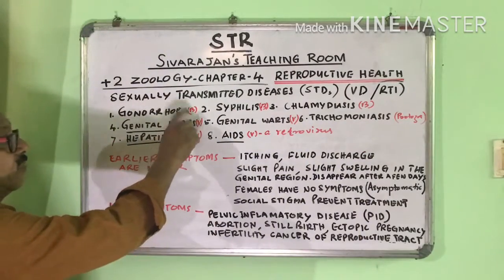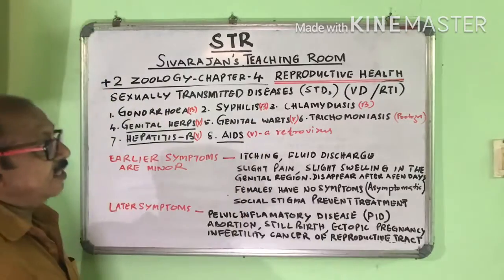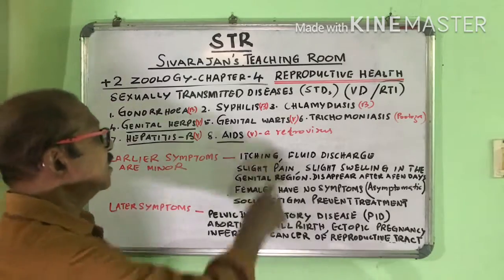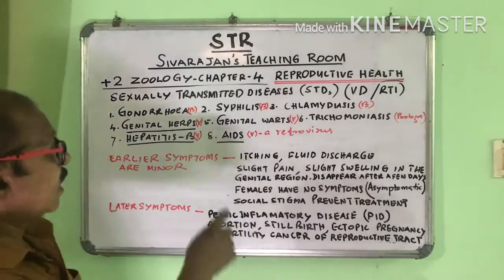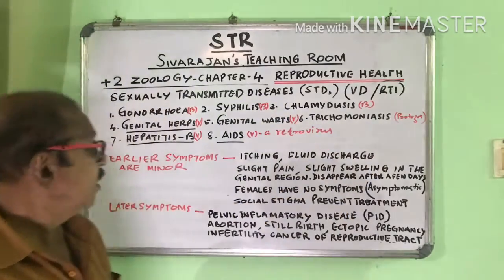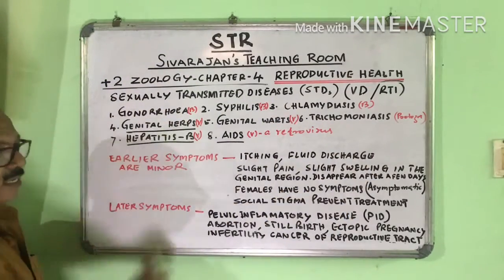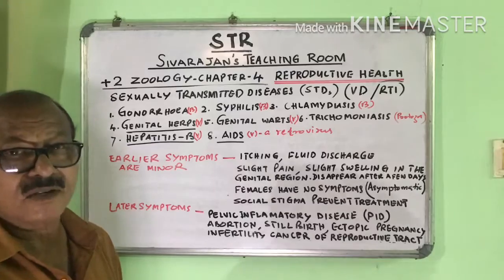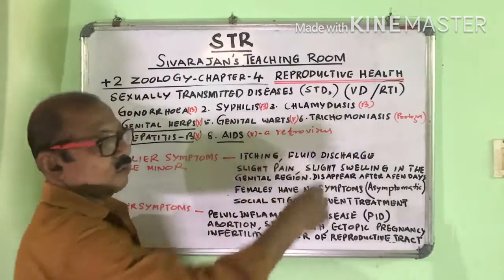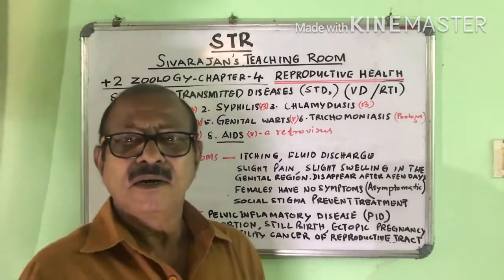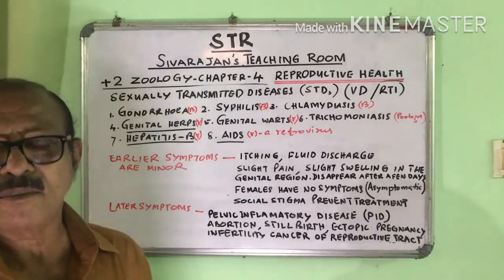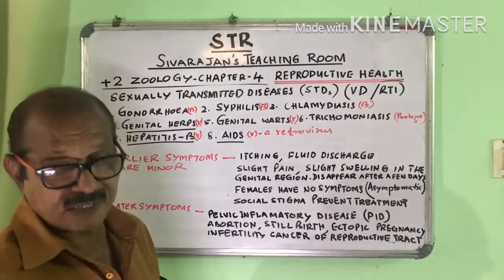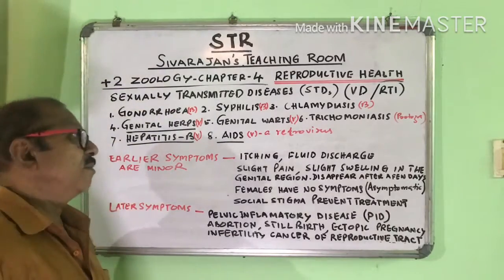So: Gonorrhea caused by bacteria, Syphilis by bacteria, Chlamydiasis by bacteria, Genital Herpes by virus, Genital Warts by virus, Trichomoniasis by protozoa, Hepatitis B by virus, and AIDS by virus — specifically a retrovirus. A retrovirus is a virus which can form DNA by reverse transcription, which we will see in coming chapters.